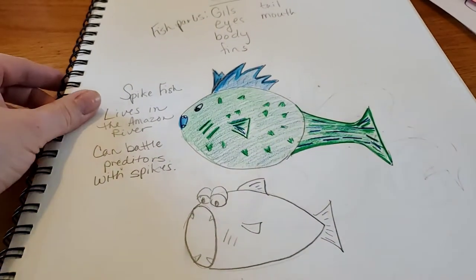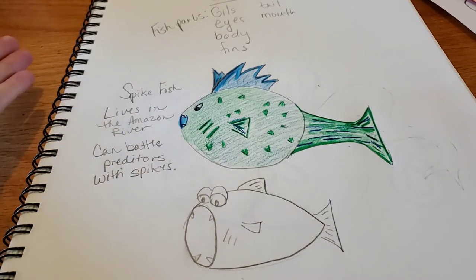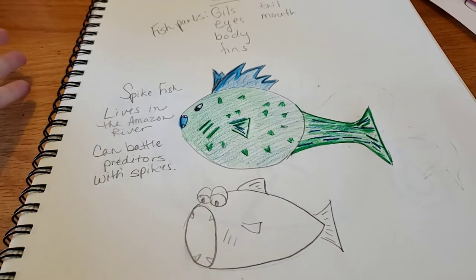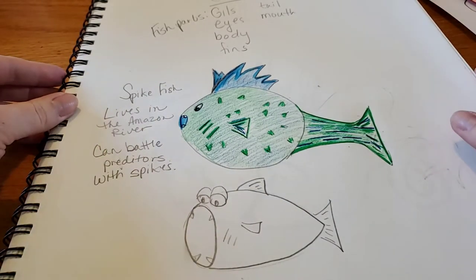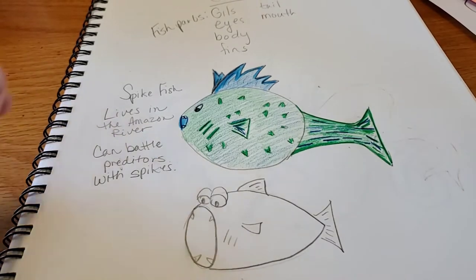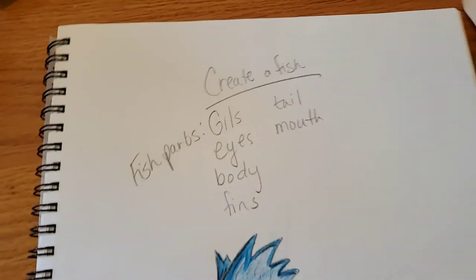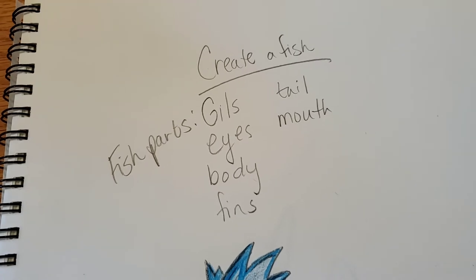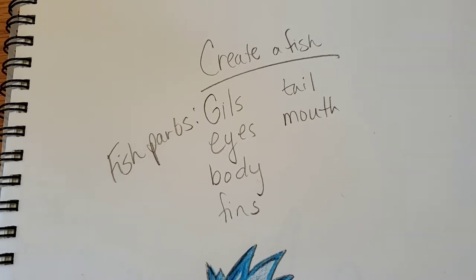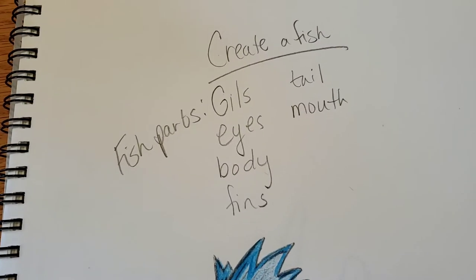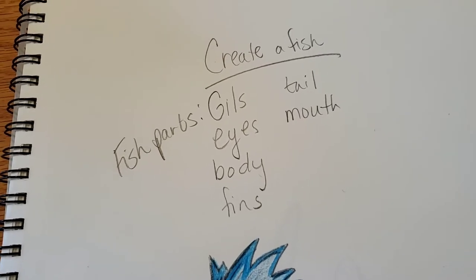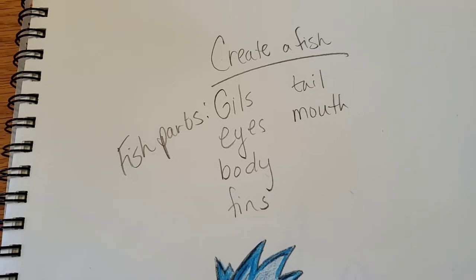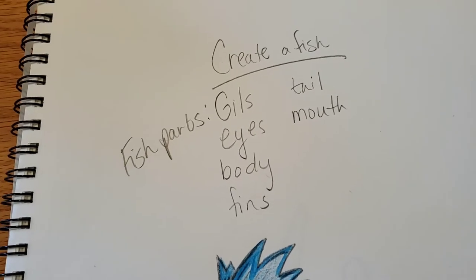So I'm going to show you my fish assignment here. You just choose to make a drawing or a sculpture — if you have Play-Doh at home and would rather do a sculpture, that's fine too. The first thing you want to do is think about what parts your fish has. We want to start with your basic fish parts: gills, eyes, body, fins, tail, or mouth. Your fish should have at least some of these to make it a fish, but you can add extra parts and we'll talk about that in a moment.